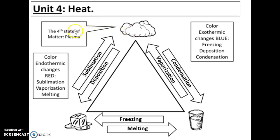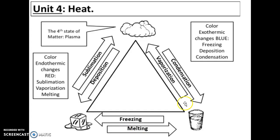There are also phase change words for the transition between gas and plasma. Not something you necessarily need to know for eighth grade, but anytime that you have gas turning into plasma, that's called ionization — you can hear the root word ion in there. And then for plasma turning into gas, that's going to be called deionization. These are the six phase changes you really need to know.